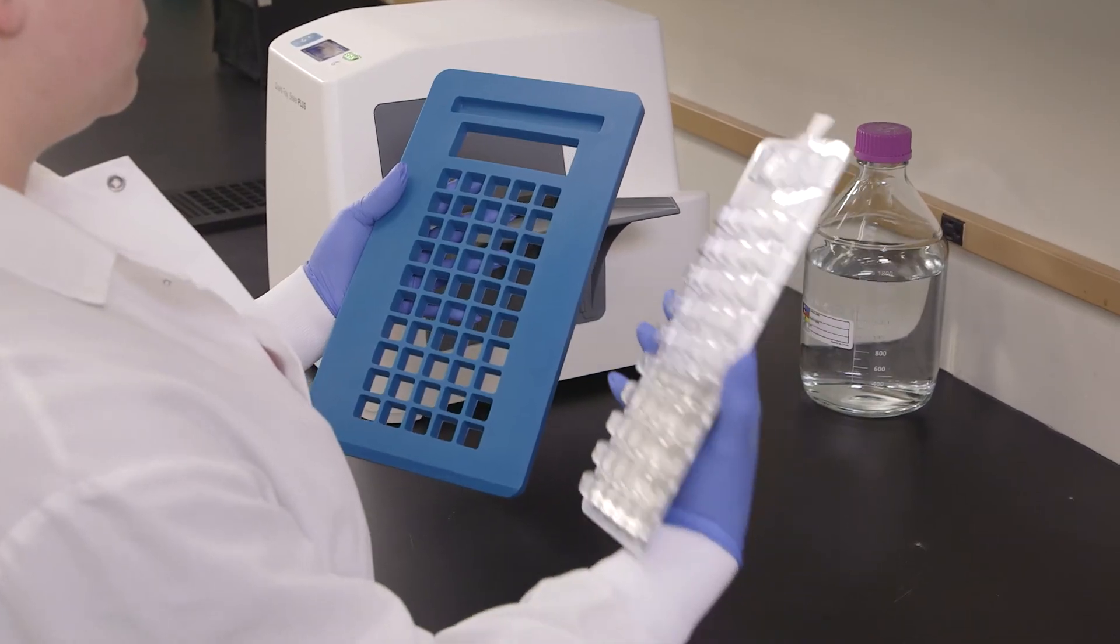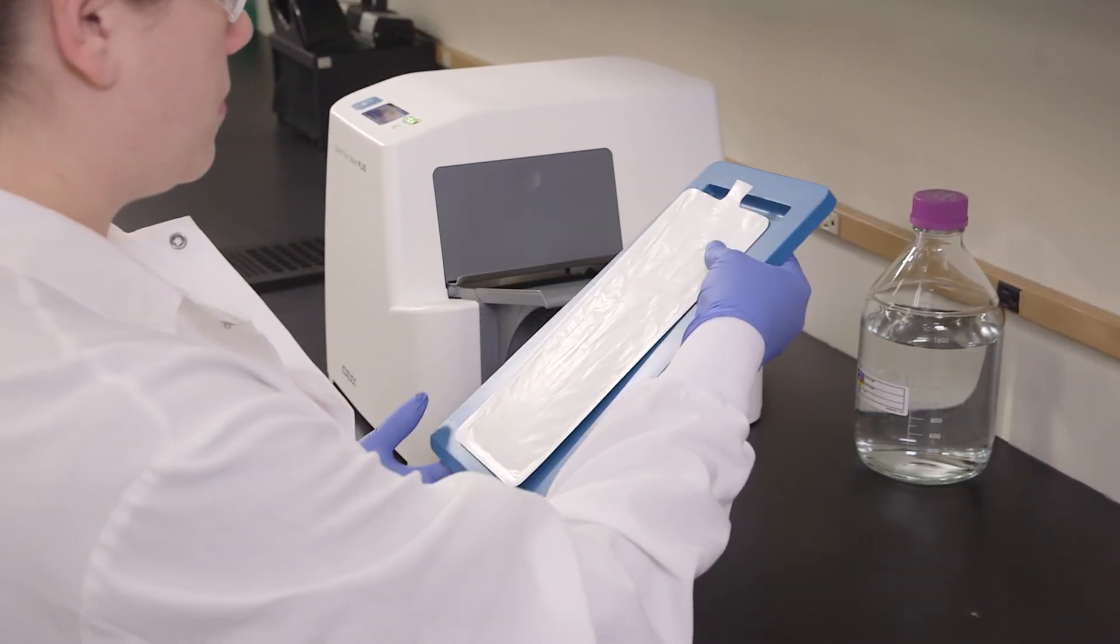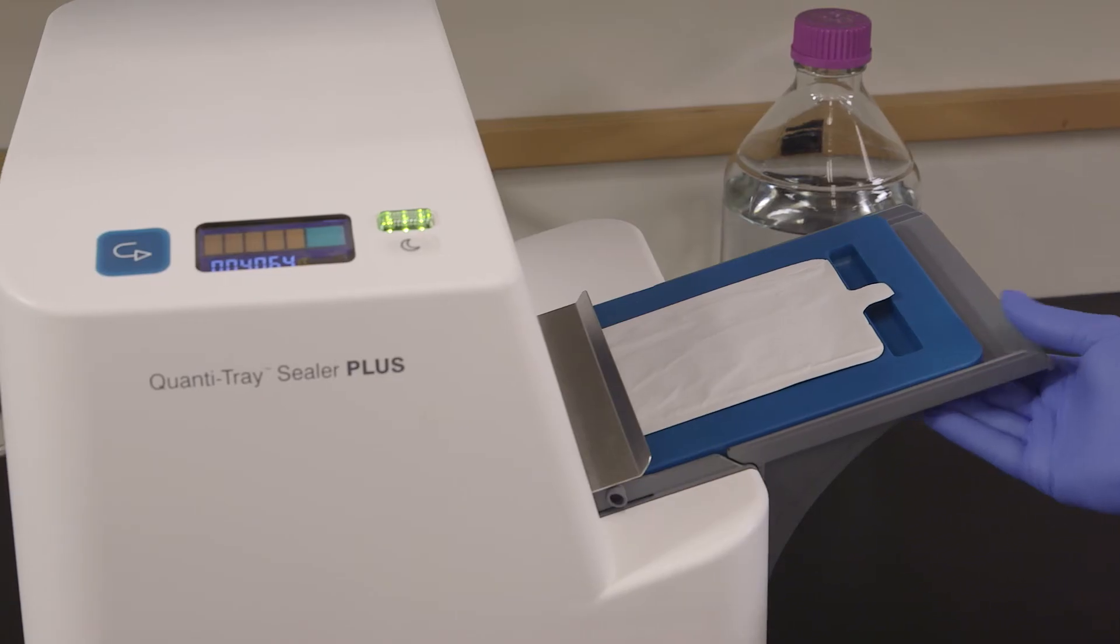Place the filled Quantitray on the rubber insert making sure each well fits its corresponding hole. Push the insert with the tray into the sealer until the sealer grabs the tray and pulls it into the slot.